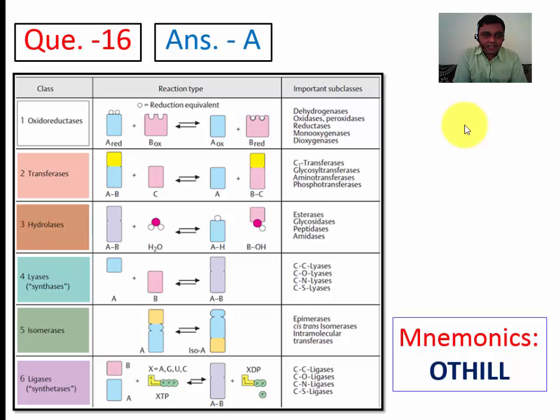You can remember it with the help of mnemonics, i.e., OTHILL: O for oxidoreductase, T for transferase, H for hydrolase, I for isomerase, L for lyase, and L for ligase.